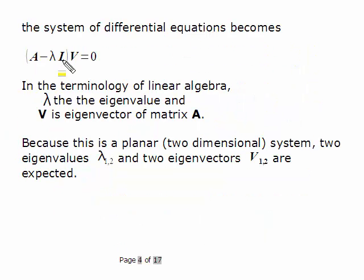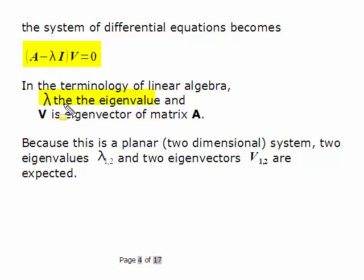The equation we get is (A minus lambda I) times v equals zero. Using linear algebra terminology, lambda is the eigenvalue and the vector v is the eigenvector of the matrix A. In general, we expect two eigenvalues and two eigenvectors.